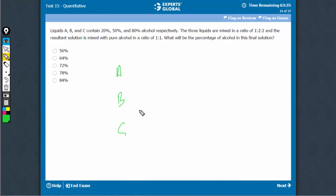A, B and C contain 20%, 50%, and 80% alcohol. They are mixed in ratio 1 to 2. So, let's assume the total to be 100, 200, 200.